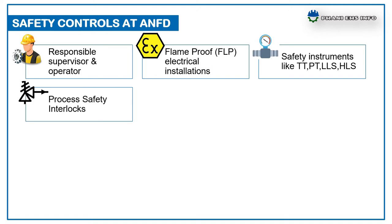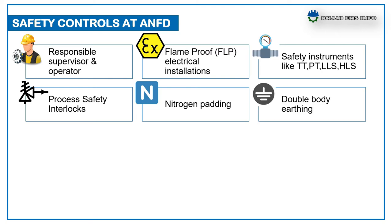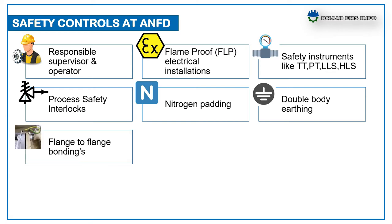Process safety interlocks like BPCS — basic process control systems — to stop chemical addition and heating sources in case of any temperature rise, pressure rise, and agitation failure. Nitrogen padding to the ANFD is provided to remove oxygen. Double body earthing is given to ANFD for discharging the static electricity. Flange-to-flange bonding for all flammable solvent transfer lines to avoid static accumulation.